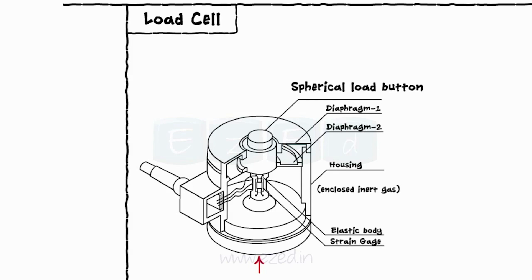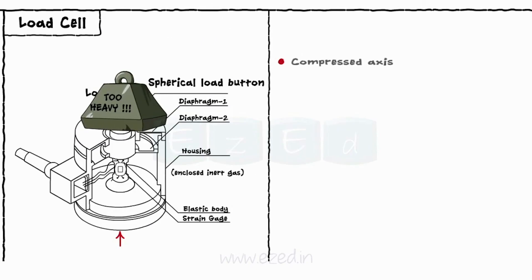The weight or load is applied along the direction shown by the arrow. Due to the stress of the load, the steel bar gets compressed along the vertical axis and expands along the X-Y axis.